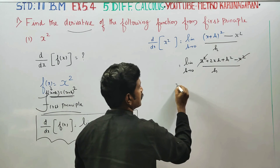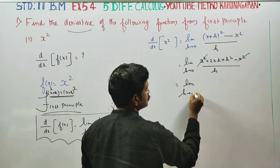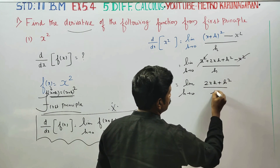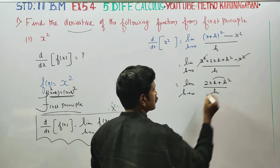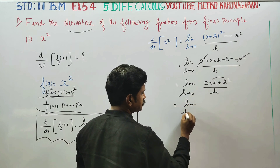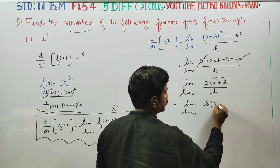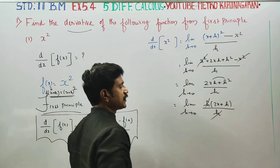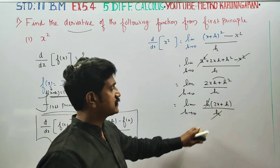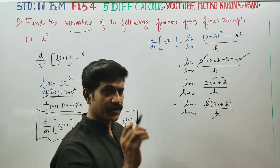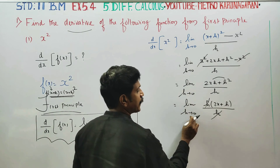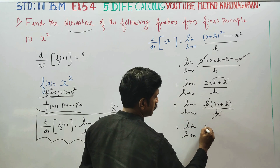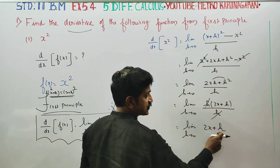The x squared and minus x squared cancel. So we have limit h tends to 0, 2xh plus h squared, divided by h. Factoring out h from the numerator: limit h tends to 0, h times 2x plus h, divided by h. The h cancels, giving limit h tends to 0 of 2x plus h. Substituting h equal to 0, we get 2x plus 0.